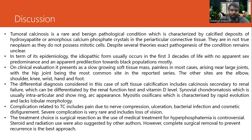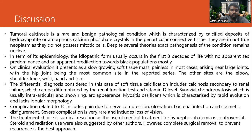The other sites are elbow, shoulder, knee, wrist, hand and foot. The differential diagnoses considered in this case for soft tissue calcification include: calcification secondary to renal failure, which can be differentiated by renal function tests and vitamin D levels; synovial chondromatosis, which is usually intra-articular with ring-arc calcification; and myositis ossificans, which is characterized by rapid evolution and lacks zonal morphosis.